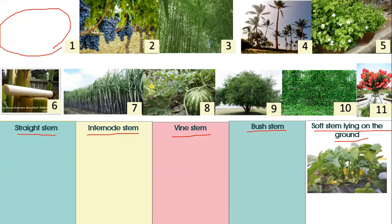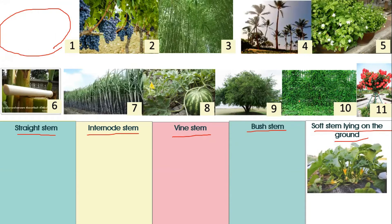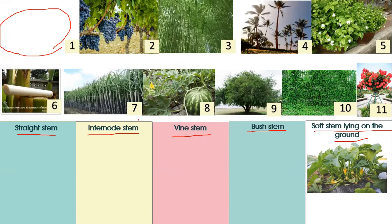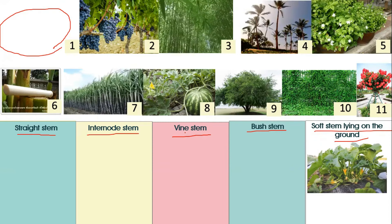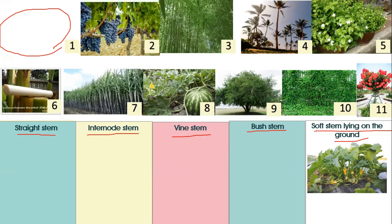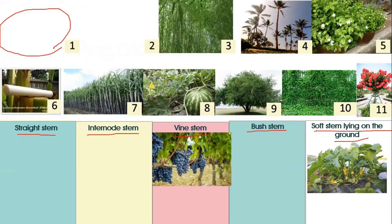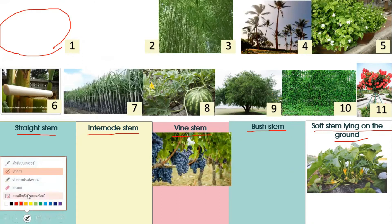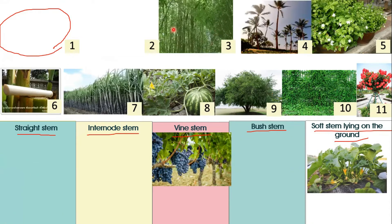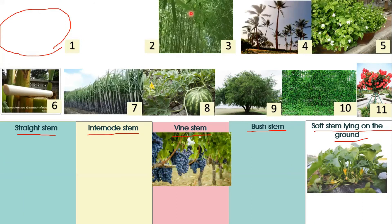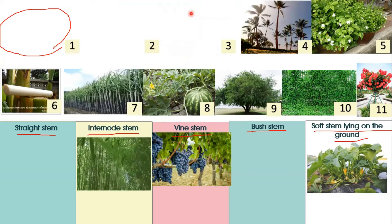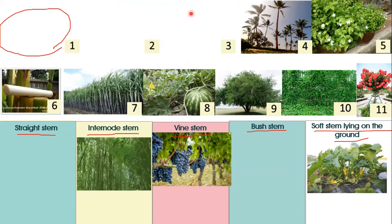Now teacher has a game for you to try. Number two is the grape stem — does it have the straight stem, internal stem, vine stem, butch stem, or soft stem? Number three is bamboo — bamboo has the internal stem.